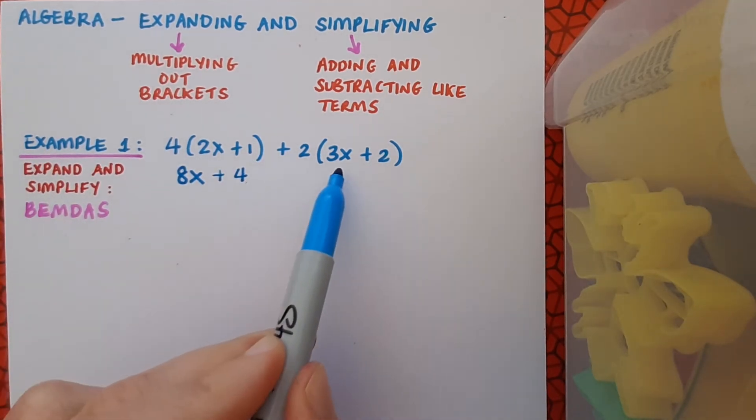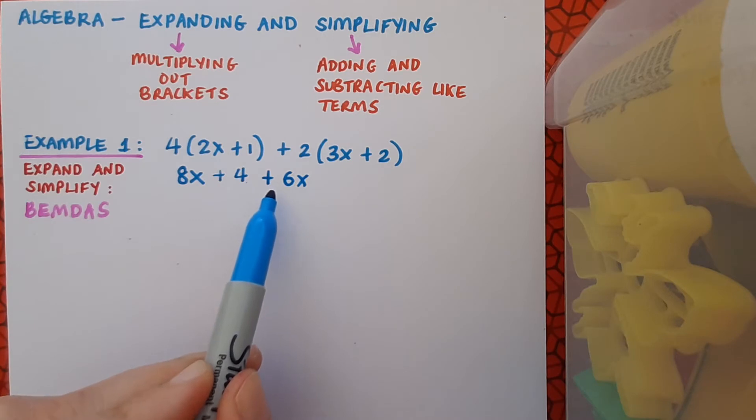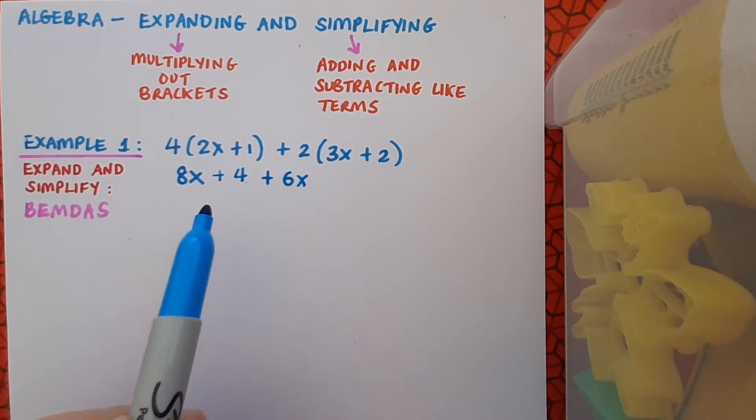Next, I've got plus 2 by 3x. That's going to give me plus 6x, and it's very important here that I write down plus 6x, not just 6x. I need something to link it to the rest of the expression. And then finally, plus 2 by plus 2 gives me plus 4. Notice that even at this stage, as I'm saying those multiplications, I'm taking note of the signs.